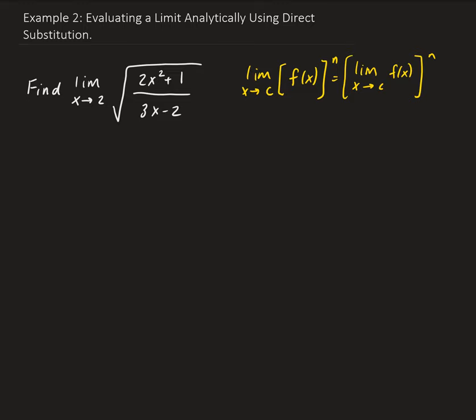So applying that here, in this case n is going to be 1/2, since we have the square root here. So we can rewrite this as the limit as x approaches 2 — so basically we have 2x squared plus 1, all over 3x minus 2, to the power of 1/2.